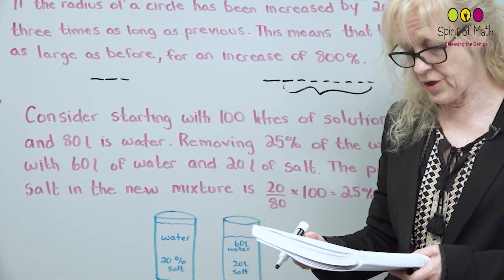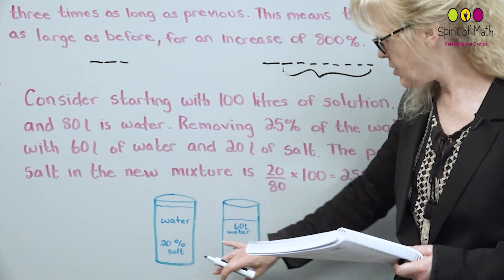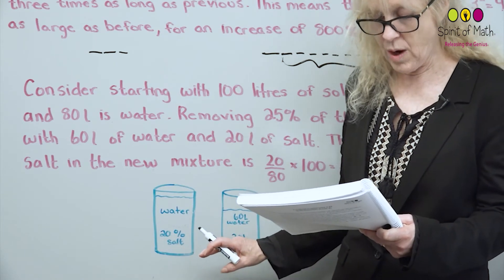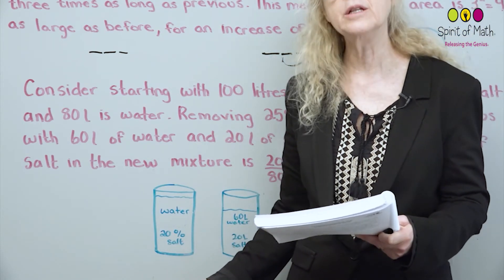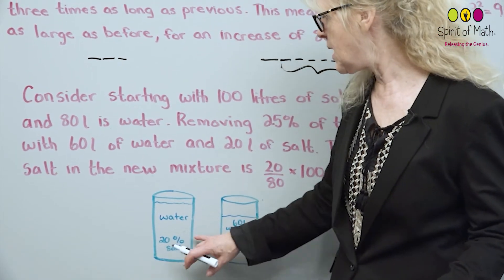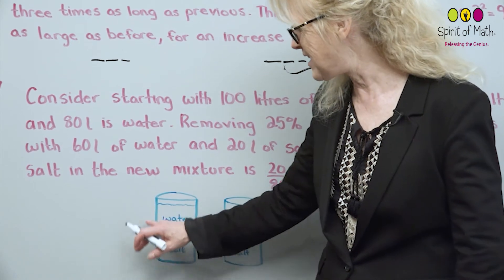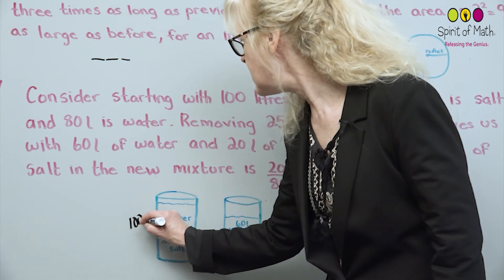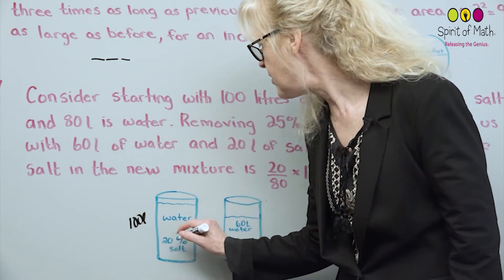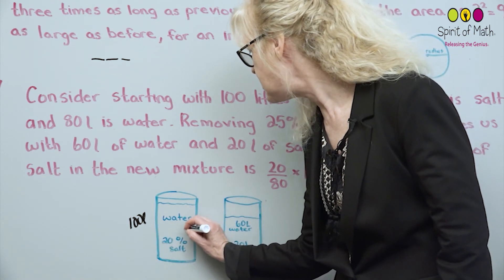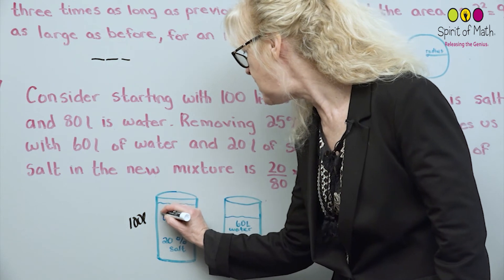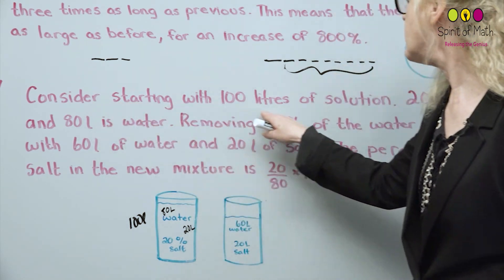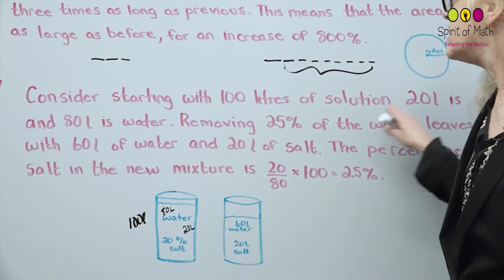Number 9, a solution of salt and water is 20% salt. So we've got 20% salt and water here. If 25% of the water is removed, what percentage of salt is in the new solution? So let's take a nice easy number, like we've been doing all along, and let's make this 100 litres. So let's use 100 litres. Then that would mean if 20% is salt, then we have 20 litres of salt and 80 litres of water. Consider starting with 100 litres of solution, 20 litres is salt and 80 litres is water.